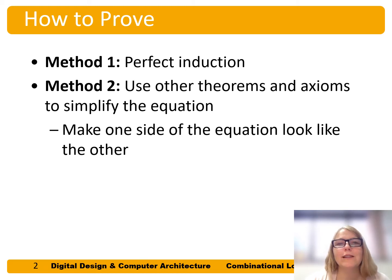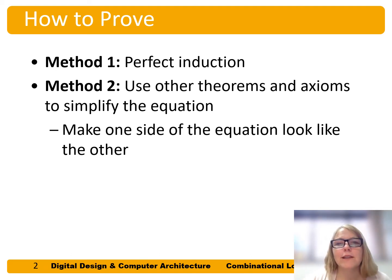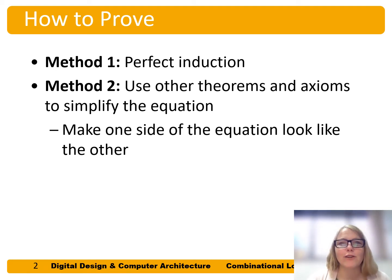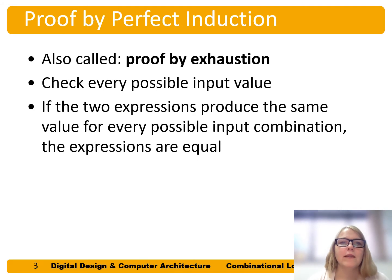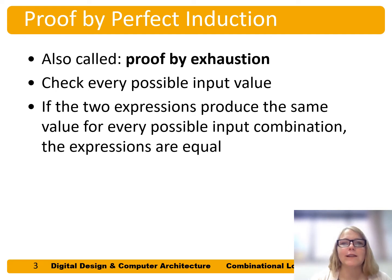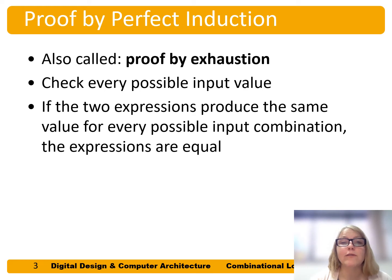We can prove Boolean theorems using two methods: either perfect induction, also called proof by exhaustion, or using axioms and theorems to simplify an equation — in other words, make one side of the equation look like the other. Proof by perfect induction checks every possible input value to see if the expressions on either side produce the same value for every possible input combination or every possible variable value.